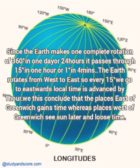The earth takes one complete rotation of 24 hours and completes 360 degrees of meridian. When it passes through 15 meridians, that means it is completing one hour. For one degree of meridian, the time difference is four minutes. So when the earth passes over one degree, it is completing four minutes. Since the earth rotates from west to east, countries to the east receive sunlight before countries to the west. When we travel from zero degrees to 15 degrees east, the time increases by one hour.